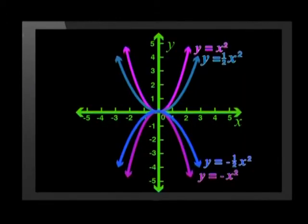The reflected graph has the same shape as the positive graph, but it is upside down. Let me show you a few more of these graphs.